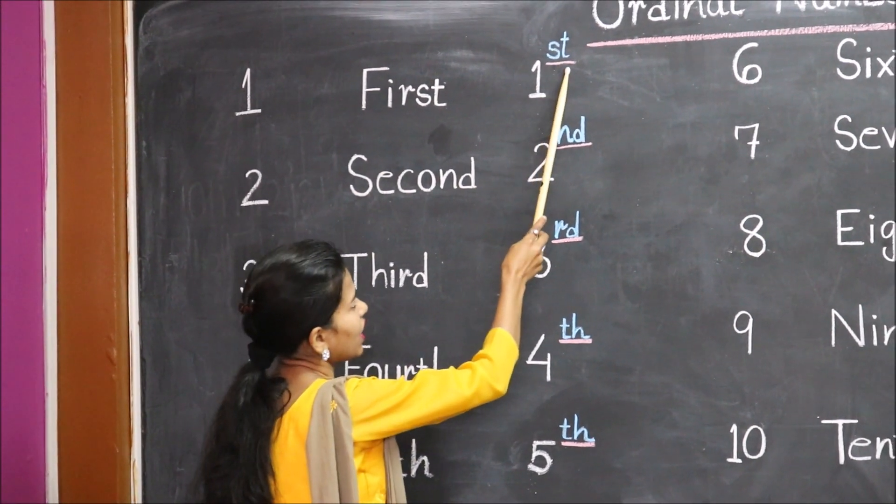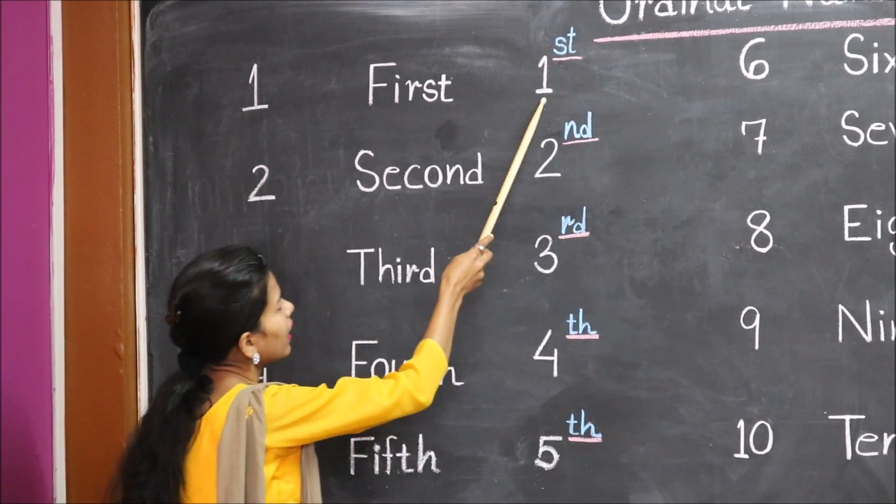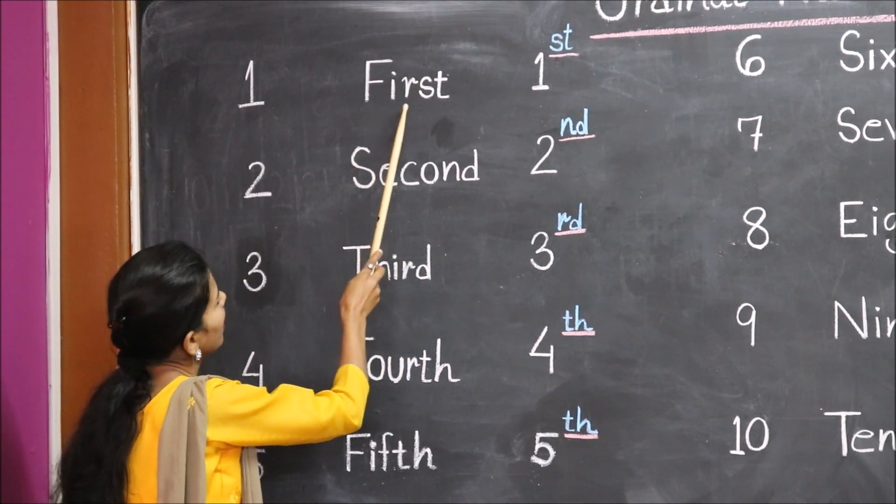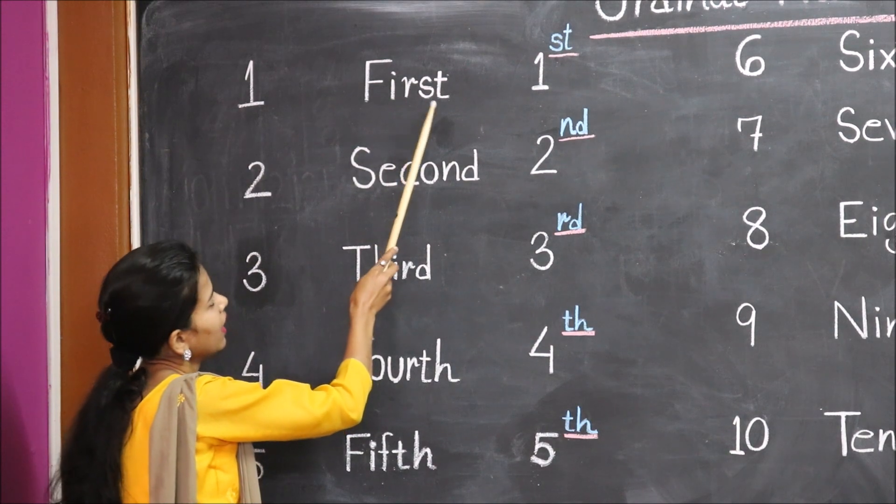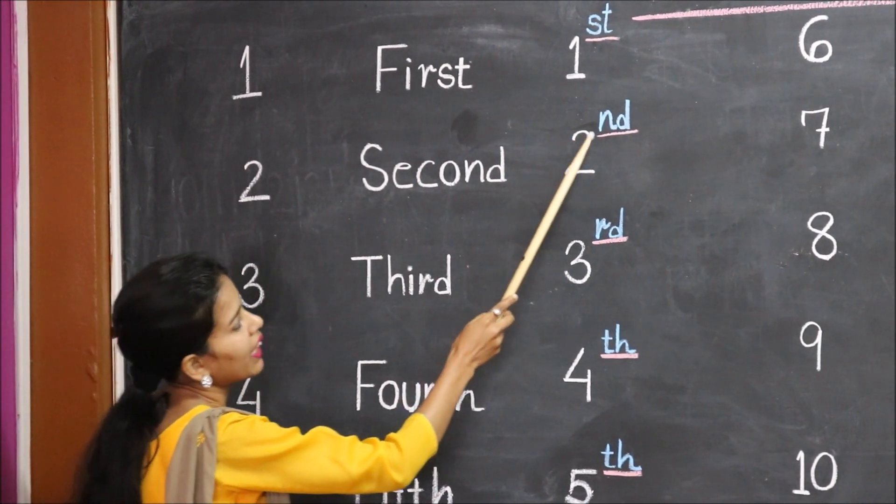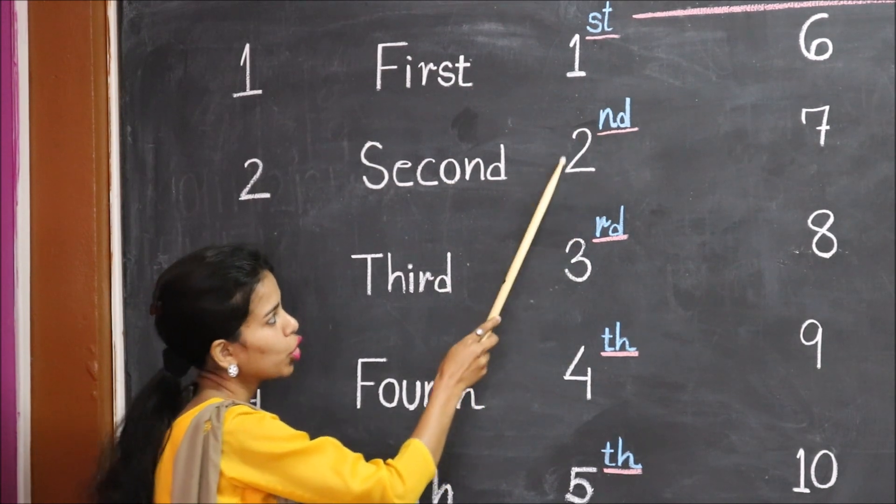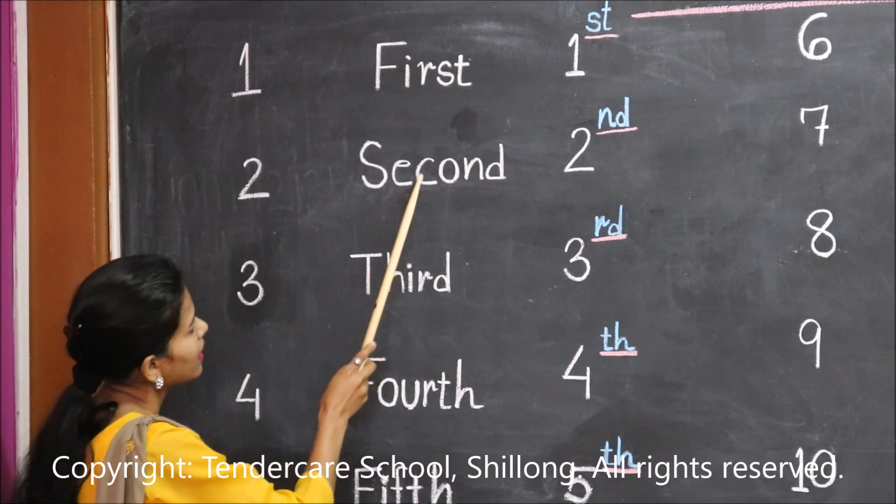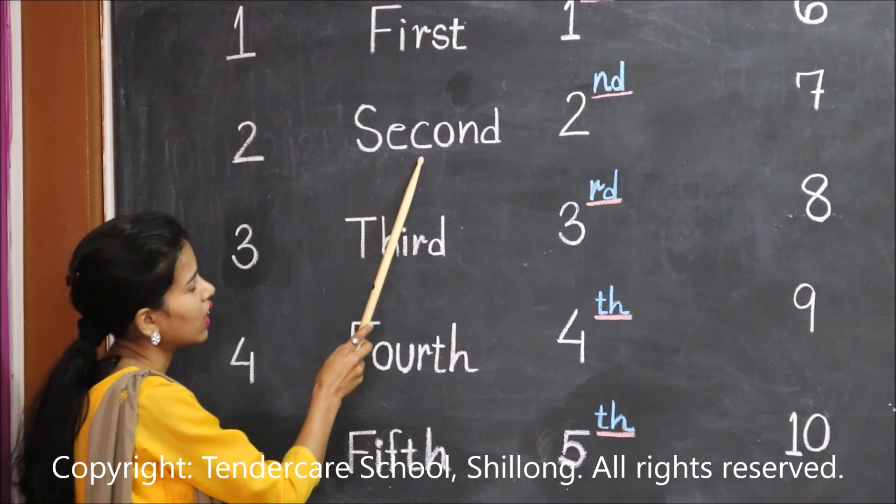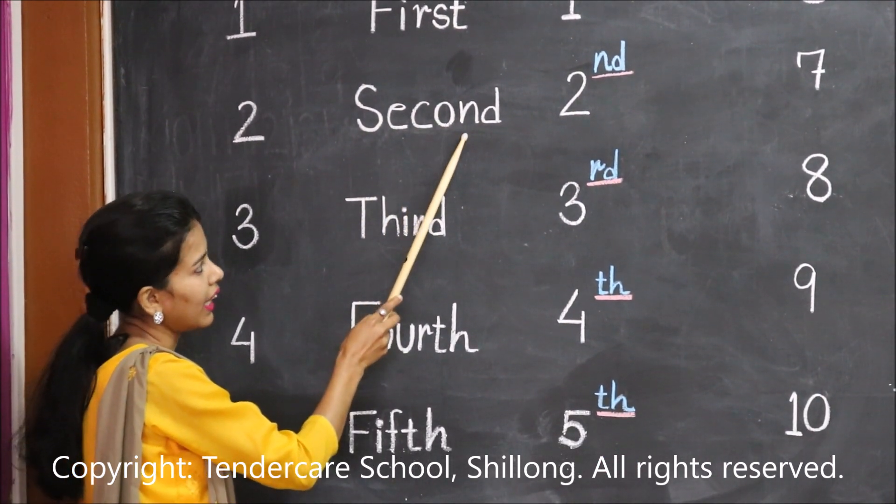when we add 'st' with one, it becomes first. F-I-R-S-T, first. When we add 'nd' with two, it becomes second. S-E-C-O-N-D,